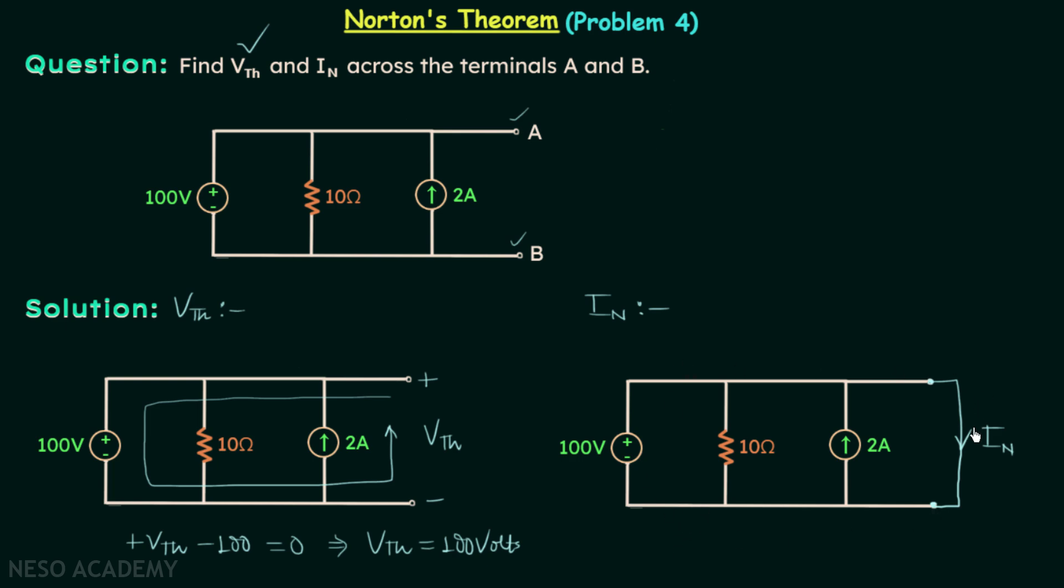When you apply KVL in this outer loop, you will have 100 volts equal to zero, which is definitely not possible. Therefore, we cannot have Norton's equivalent circuit for this network, and we cannot calculate In.